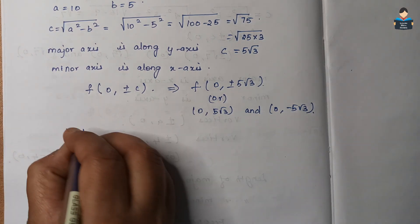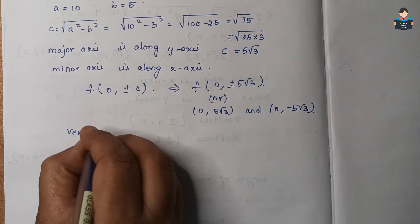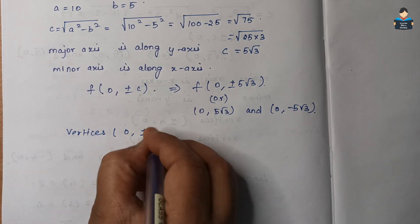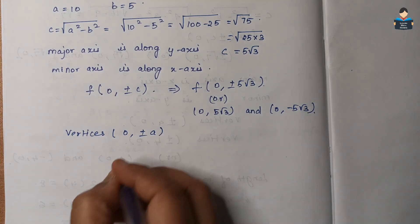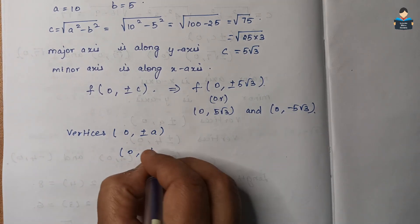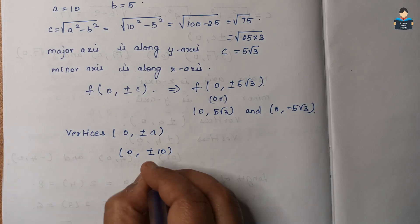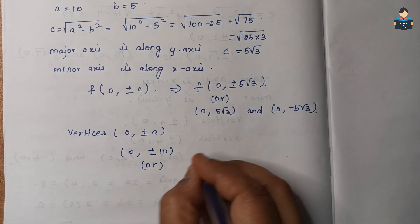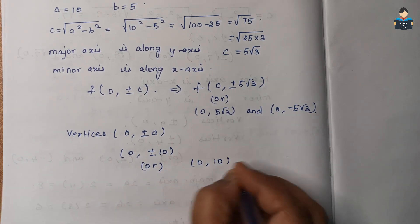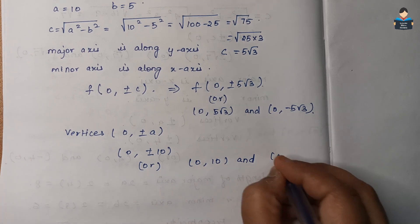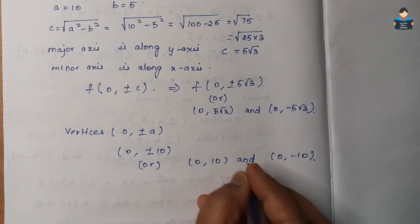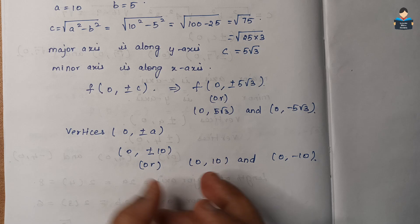The coordinates of the foci are (0, ±5√3). Next, the vertices: vertices are at (0, ±a), which is (0, ±10), so the vertices are (0, 10) and (0, −10).